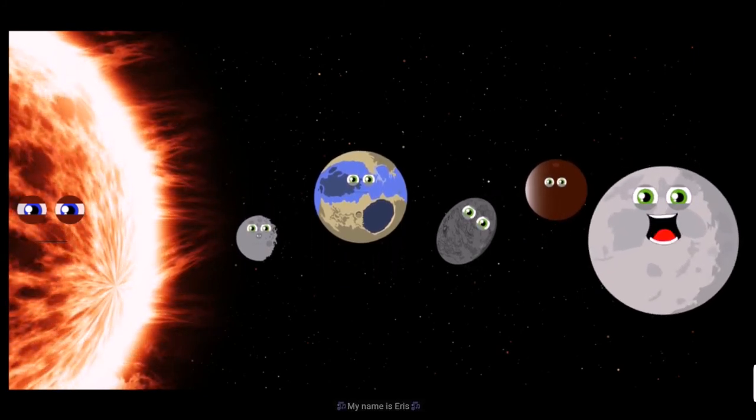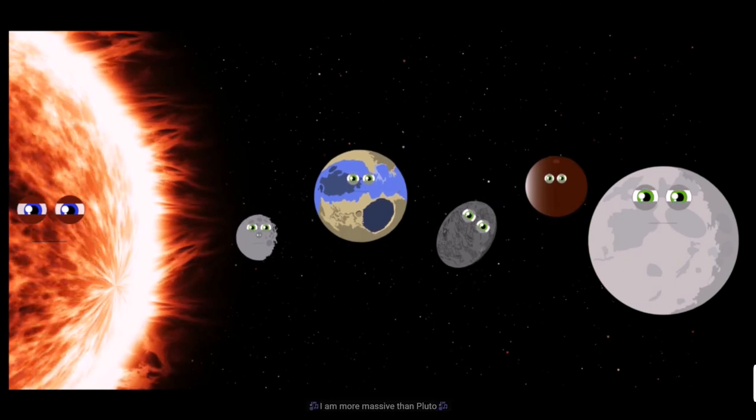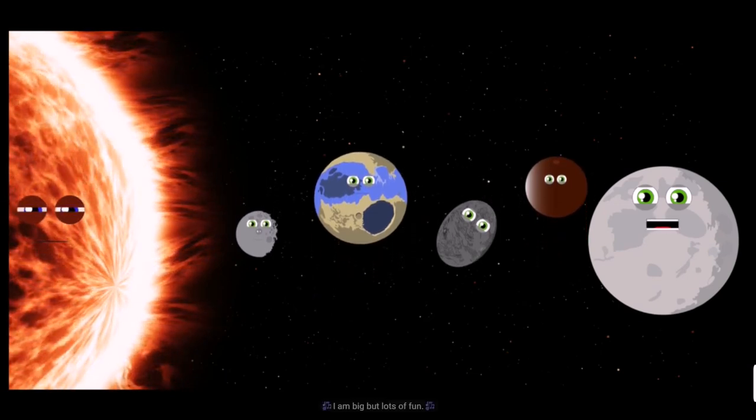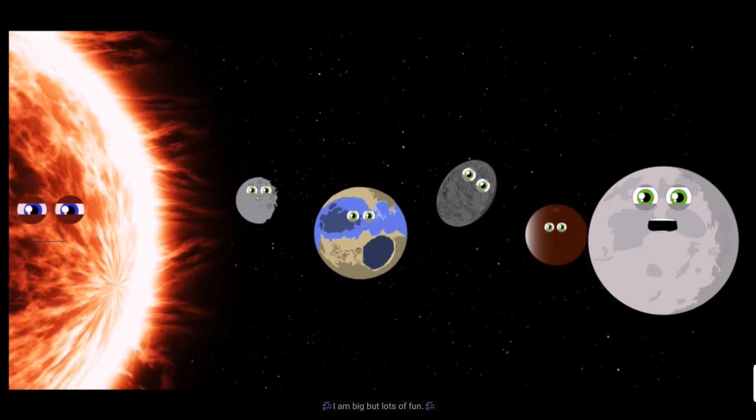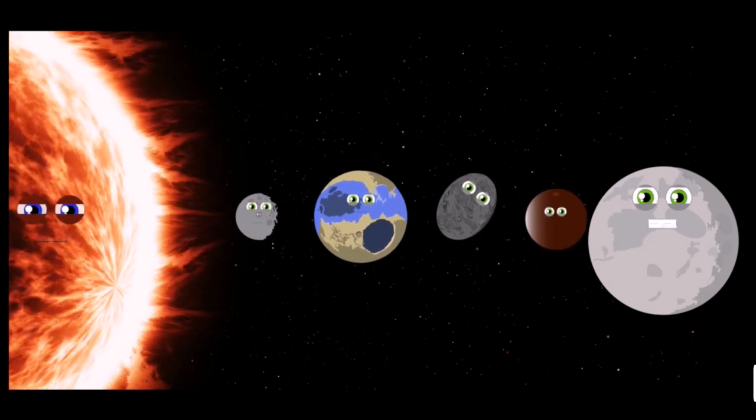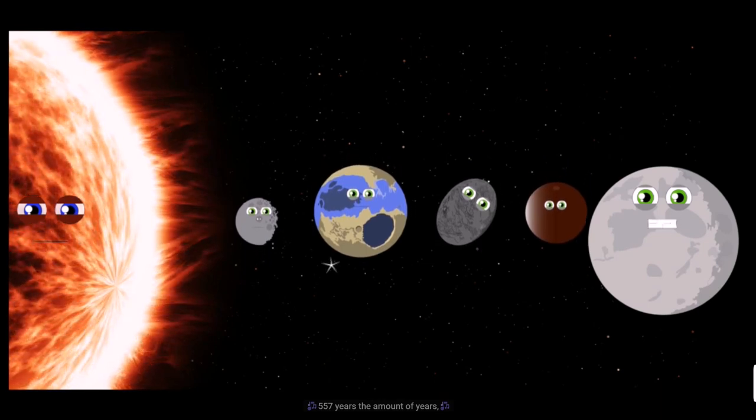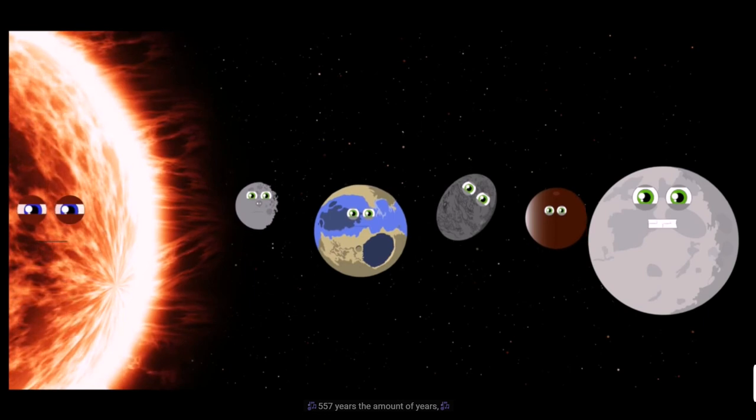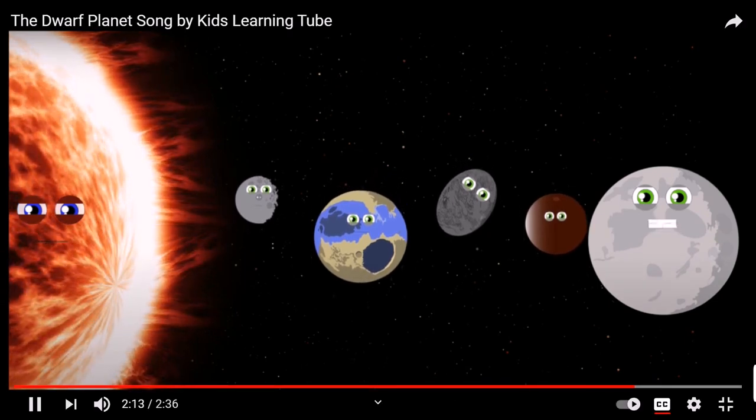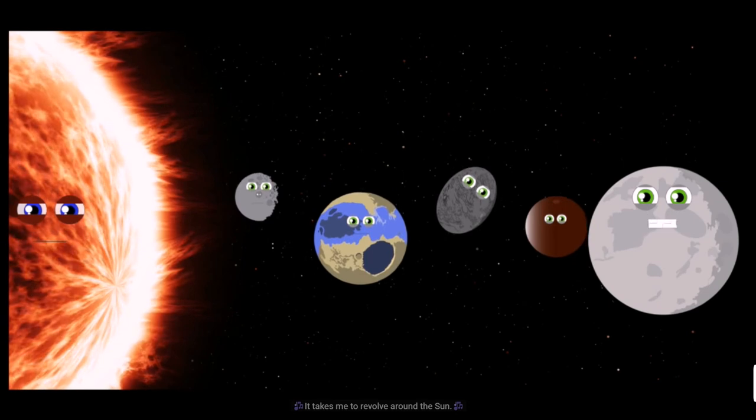My name is Eris. I am more massive than Pluto. I am big but lots of fun. Five hundred fifty-seven is the amount of years it takes me to revolve around the sun.